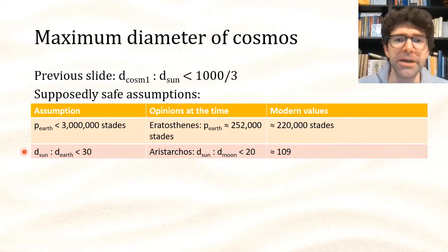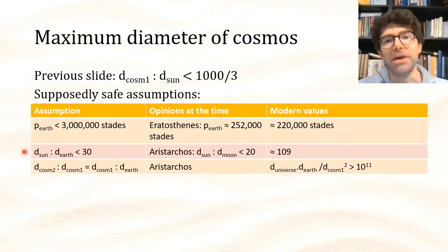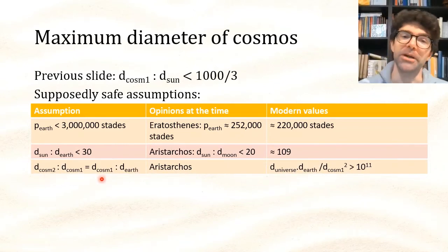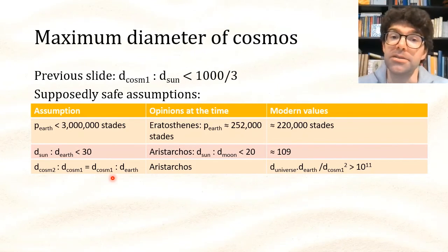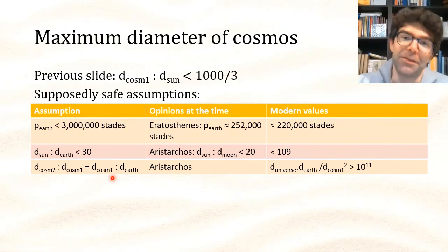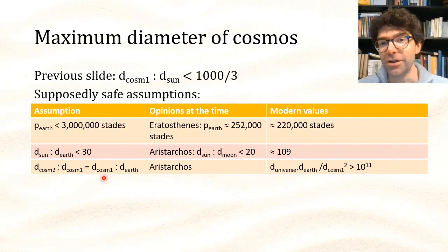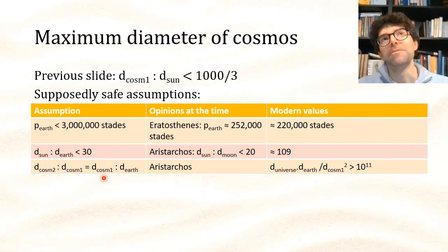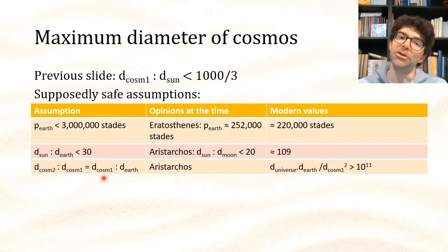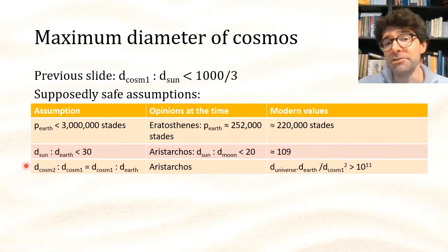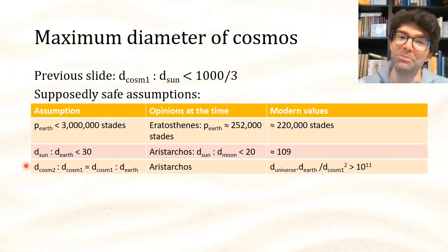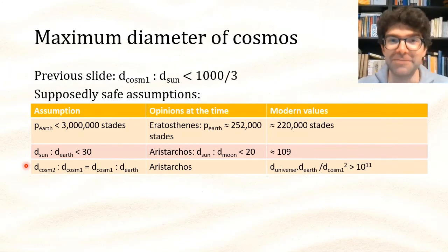Archimedes also didn't question Aristarchus' principle about how his cosmos compared to the normal geocentric one. Aristarchus' stars could be — and in fact are — vastly further away, so his model doesn't actually offer an upper limit on the size of the universe. Archimedes might have noticed that, but his main concern was to adopt generous assumptions his readers would accept, and since Aristarchus' universe was already so much bigger than most people were accustomed to believe, he left it untouched.